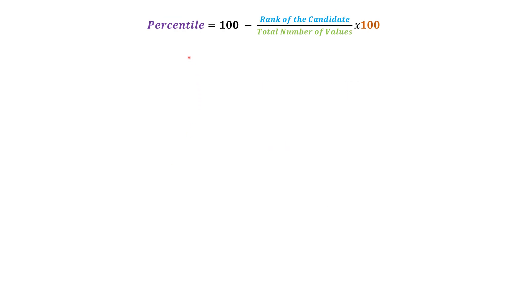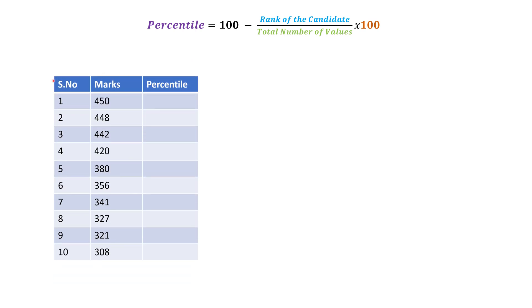Applying the second formula, I am using the same data set, same numbers and same marks in same descending order. The formula is 100 minus rank of the candidate divided by total number of values into 100. Now let us calculate the percentile of the same candidate who got 420 marks and who is at fourth position.